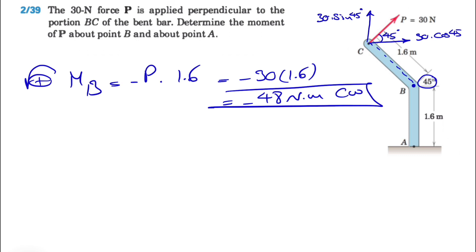So let's find the moment about point A. Again, counterclockwise positive. Let's go with the 30 cosine of 45 component first. As we can see, the moment is this direction, so clockwise negative again. So that's the force, and the distance is what we have from here to here, which is 1.6 plus this distance here, which will be 1.6 sine of 45 degrees.